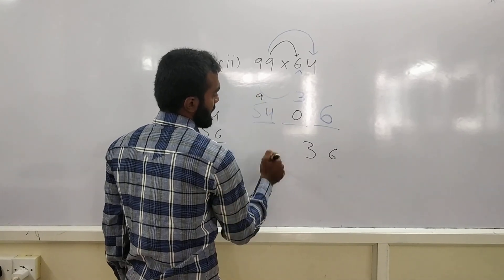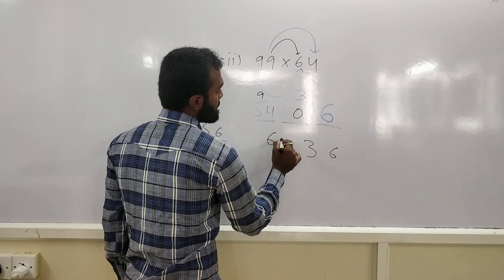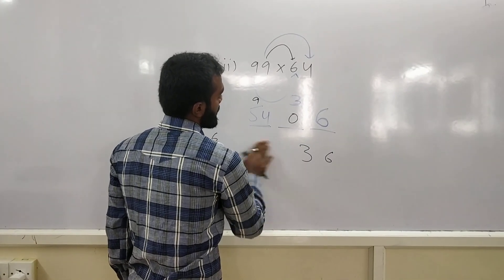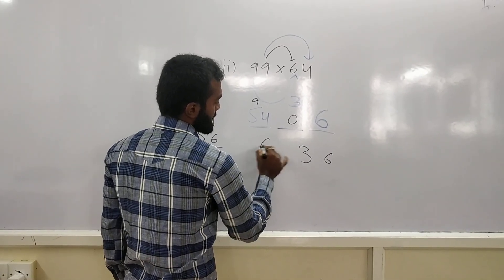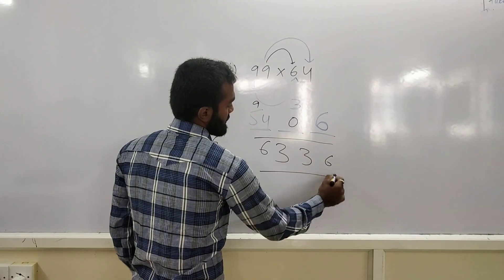And, 54 plus 9 is 60. 54 plus 9 gives you the result of 63. This is your final answer. Right?